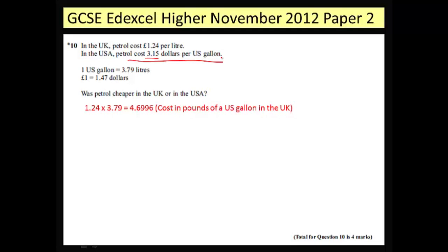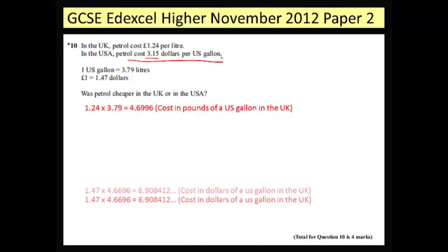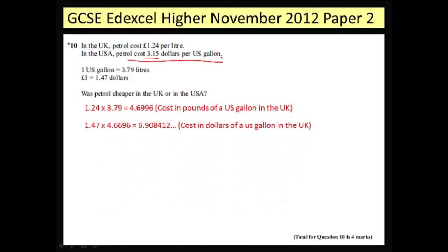What I then need to do is take this cost in pounds — because I've now turned it into gallons — and turn the pounds into dollars. I'm going to do that by multiplying it by 1.47, which is the exchange rate from pounds to dollars, and this gives me 6.90 and a few numbers afterwards. It's important to note that because we're dealing in currency, I'm only interested in the first two decimal places.